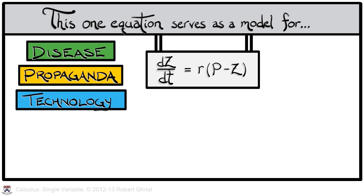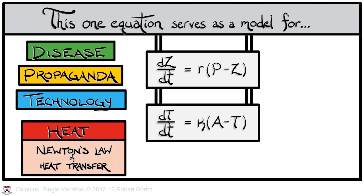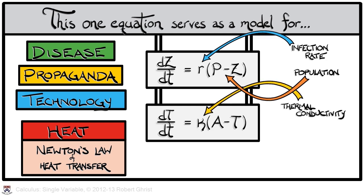It's even better when applied to heat. Newton's law of heat transfer is essentially the same equation. It says the rate of change of temperature with respect to time is proportional to the difference in temperature with the ambient environment. So, in our zombie equation, this constant of proportionality, r, was an infection rate, and p was a constant population size. In Newton's law of heat transfer, the constant is a thermal conductivity. How easy is it for heat to spread? And the constant a is an ambient temperature. Same equation, very different interpretations. That's one of the beauties of differential equations.